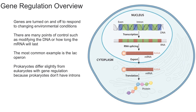Gene regulation refers to how genes are turned off or on in order to produce specific cell types and to respond to changing environmental conditions. As you can see over here, I've put a picture of the gene being transcribed and then translated. This is the DNA, and then it's eventually going to get transcribed into mRNA.